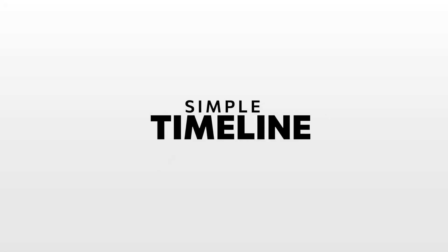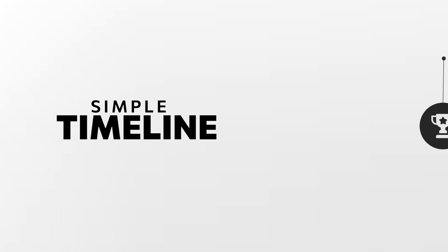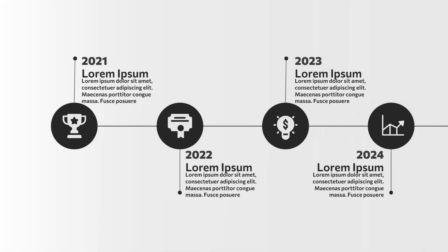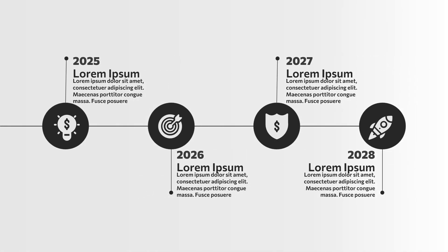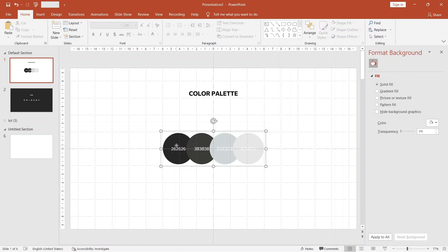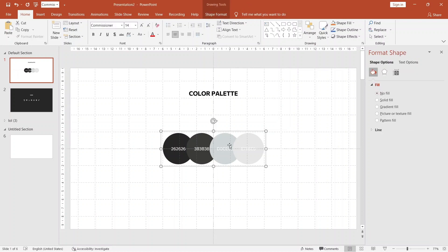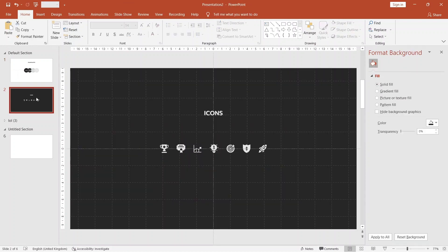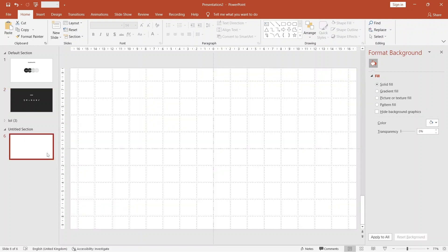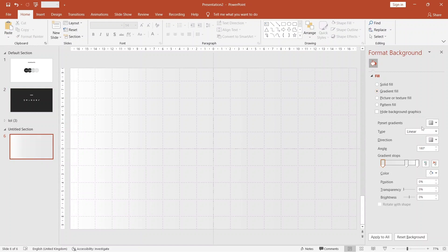In this tutorial, we are going to make a timeline animation in PowerPoint. I am using this color palette for this tutorial. You can use icons of your choice. Create a new slide and go to format background, and fill the background with this gradient.